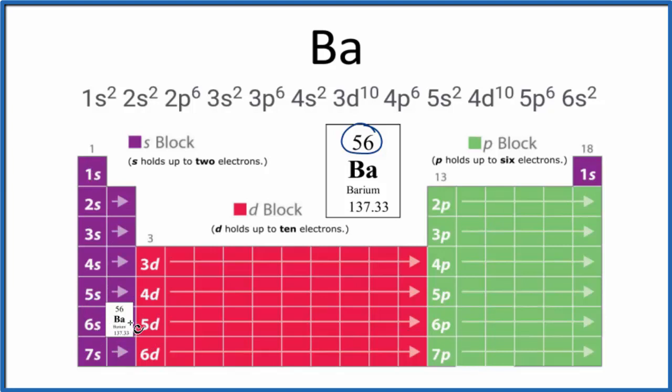You can see we have 6s1 and 6s2. So barium's configuration ends in 6s2. We already know that. To fill in all this, we just follow the periodic table.